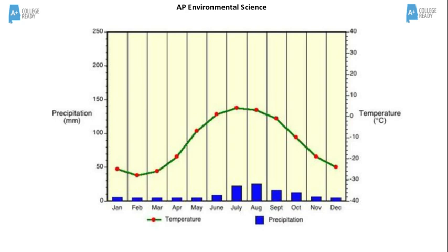Notice the temperatures generally are below or very close to zero degrees Celsius. The temperatures are lower in winter and increase during the summer. The precipitation is very low generally and increases slightly during the summer.